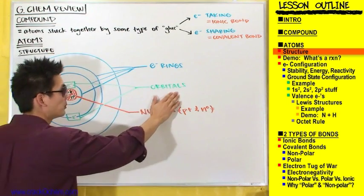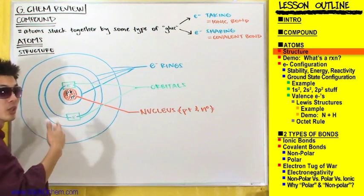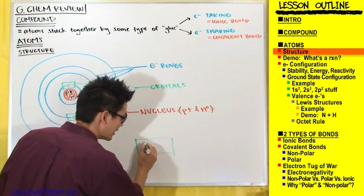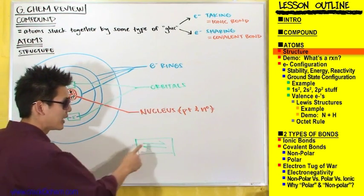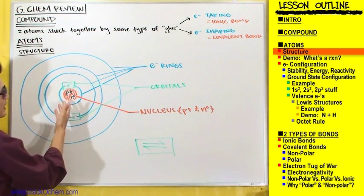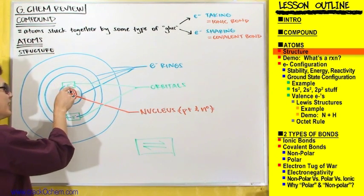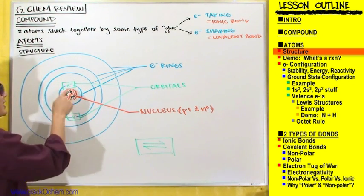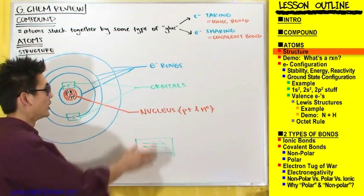The way we represent an orbital is by using a rectangular box and putting an electron inside. Normally you'll see this as a rectangular box with half-headed arrows inside — one arrow pointing up and one pointing down — which stands for two electrons. The idea is that we've got an orbital designating that we think the electron is right there. Not here, not here, not here — our best guess is that this electron is right there within that electron ring, and that best guess is known as an orbital.